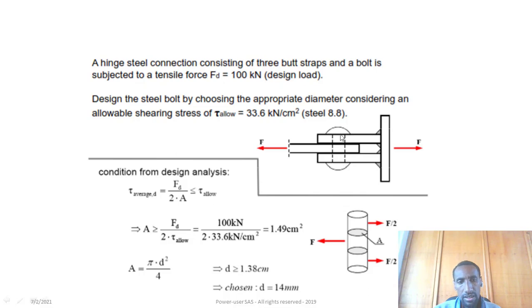This 14 mm bolt can resist the design tensile force applied to the connection. The minimum cross-sectional area of the bolt should be 1.49 cm² and minimum diameter should be 14 mm.